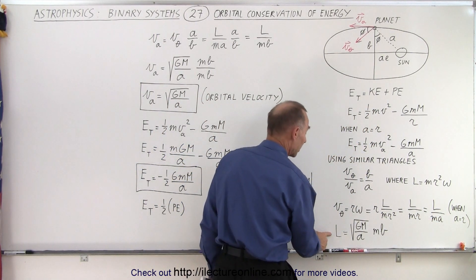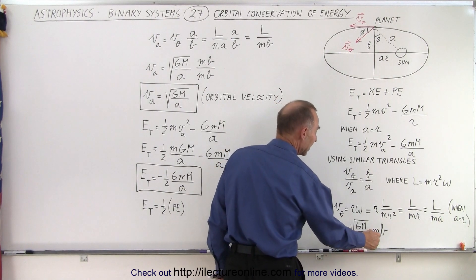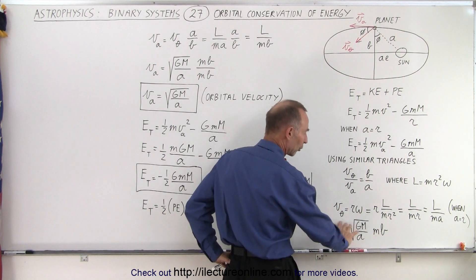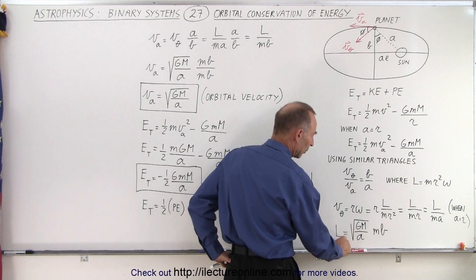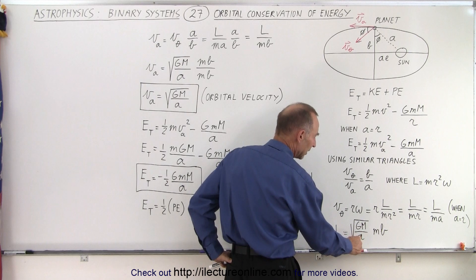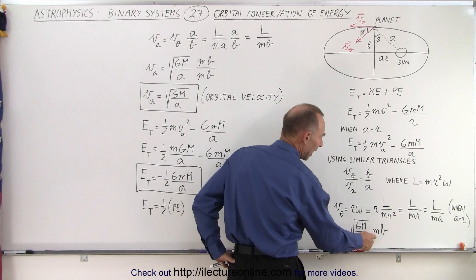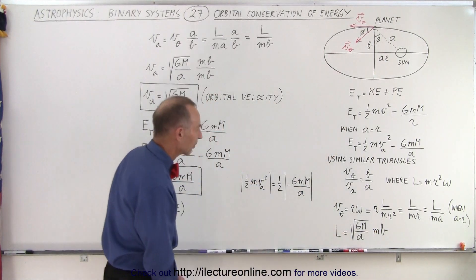Therefore, the angular momentum L is equal to the square root of Gm over A, times mB. This came from a previous video. We can write L in terms of the orbital velocity — the square root of Gm over A — times m times B, where B is the semi-minor axis.